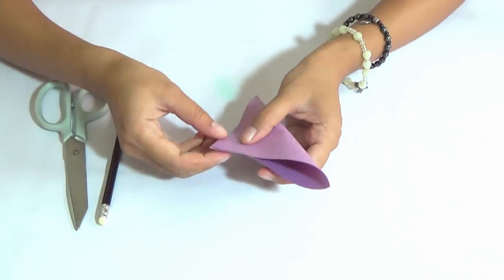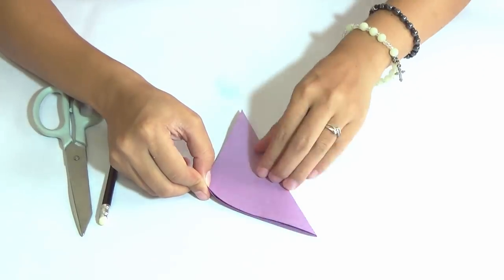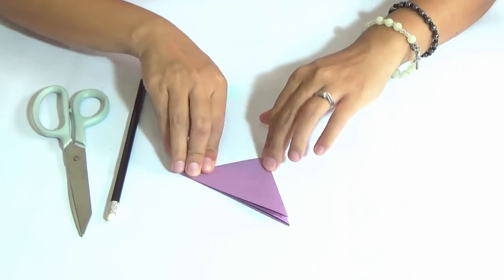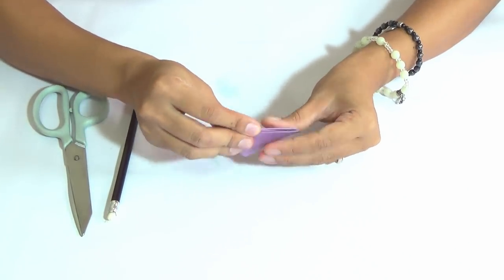All pieces will be folded the same way. We start by folding the first square diagonally. We need to make 4 folds.